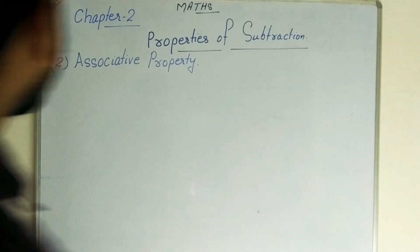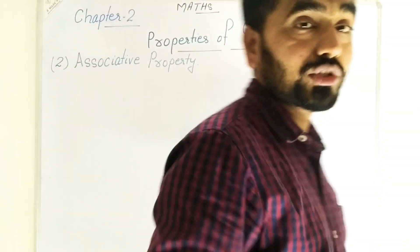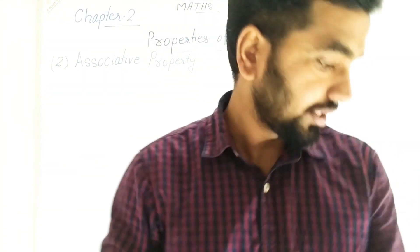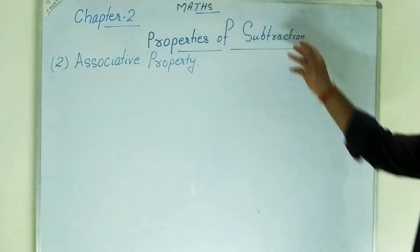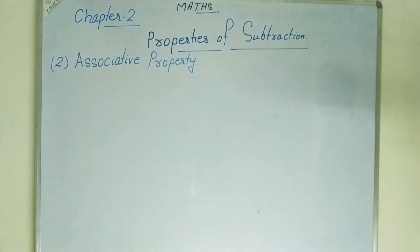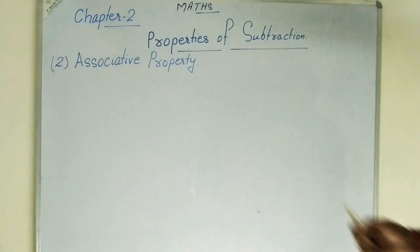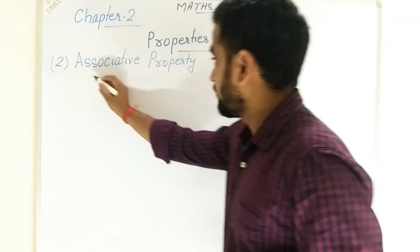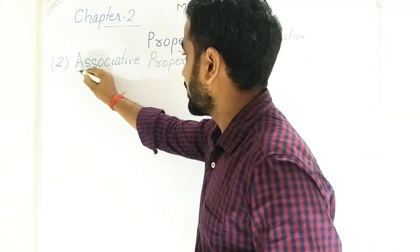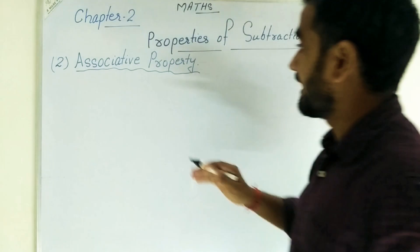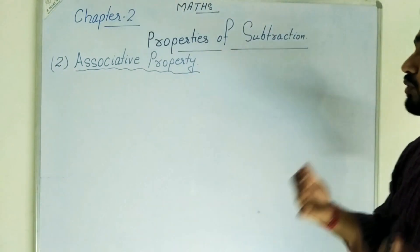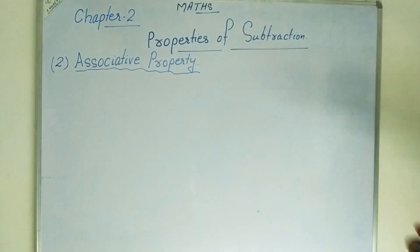The next one is our associative property. This is property number 2 of subtraction. First of all, what do you mean by associative property?